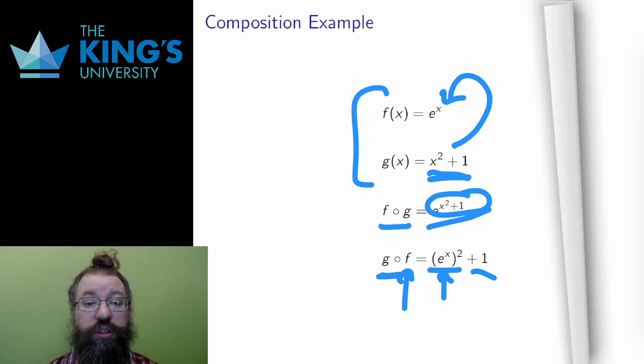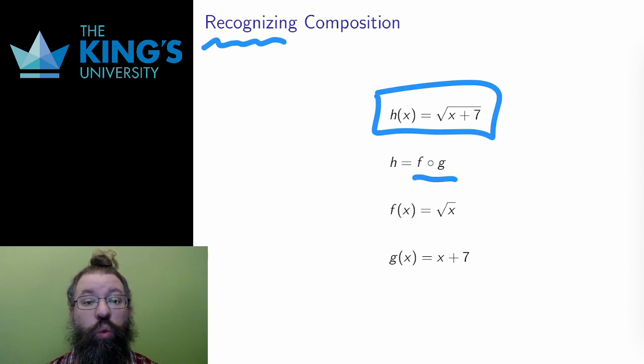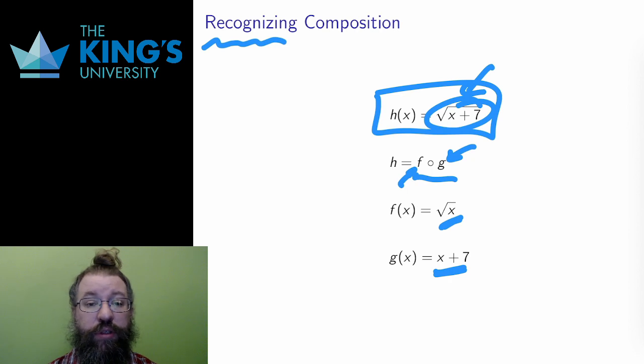Sometimes I have to construct compositions, but often a function is already the composition of various pieces, and I need to simply recognize the fact to work with the function. Here's a function h. I would like to write it as the composition f compose g with f the outside function and g the inside function. How do I do that? Well, I look at the structure of h. h has a square root, and then an addition inside. The square root happens to be the whole rest of the function, so I can treat the square root as the outside. Inside the square root, all that happens is taking the variable and adding 7. So the inside is adding 7. In symbols, the outside f is square root x, and the inside is x plus 7. Note again in the notation f compose g that the inside, g, happens first.